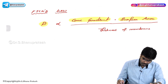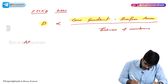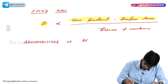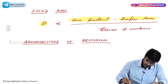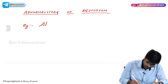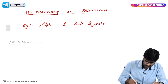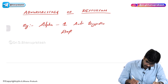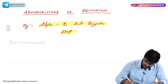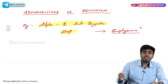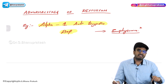This is Fick's law. Now, after seeing this, let's talk about some abnormalities of diffusion. Let's take an example of a condition called alpha-1 antitrypsin deficiency. We know that this deficiency of alpha-1 antitrypsin will cause a disease called emphysema. What happens to diffusion of gases in emphysema - does it increase or decrease?